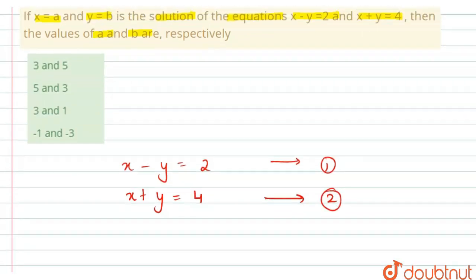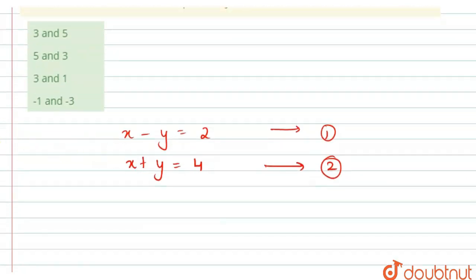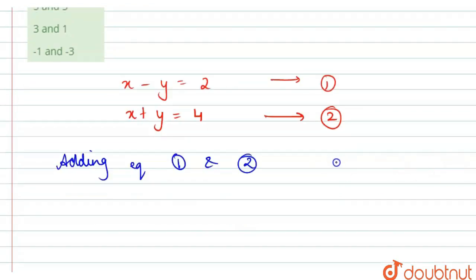We will add equation 1 and 2. So x minus y equals 2, and x plus y equals 4. If we add them both, what happens here?